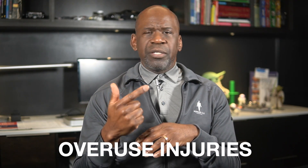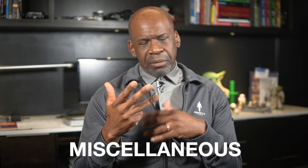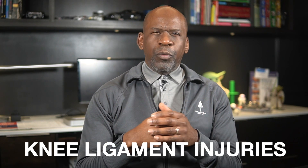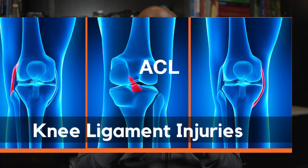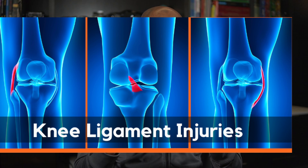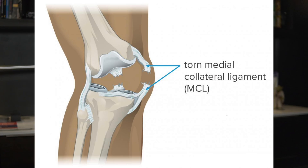When discussing knee pain, I will group the causes into four sections: acute injuries, overuse injuries, degenerative conditions, and miscellaneous. The knee is susceptible to ligamentous injuries, with the anterior cruciate ligament (ACL) and the medial collateral ligament (MCL) being the most commonly affected. ACL tears often result from sudden twisting or hyperextension of the knee, whereas MCL injuries typically occur due to direct impact on the side of the knee or a forced valgus stress.